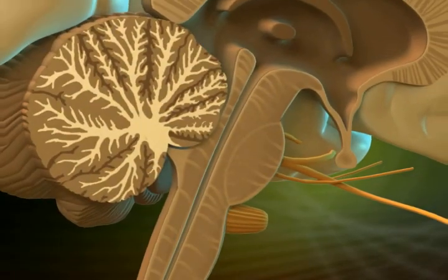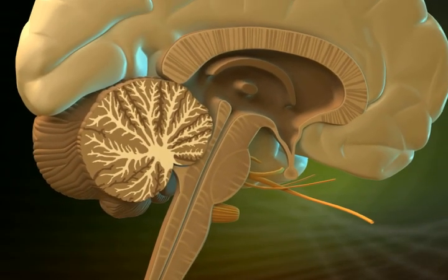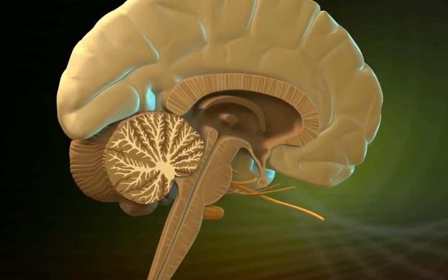By blocking the NK1 receptor, SP is reduced, thereby reducing the signal and the feeling to vomit.